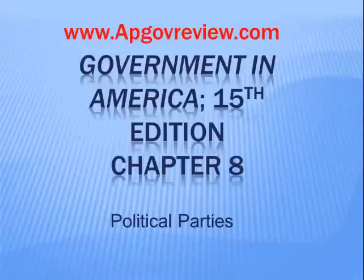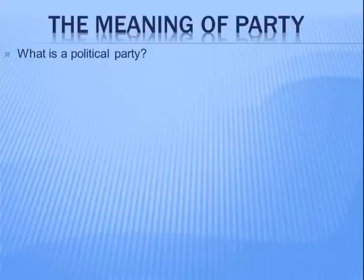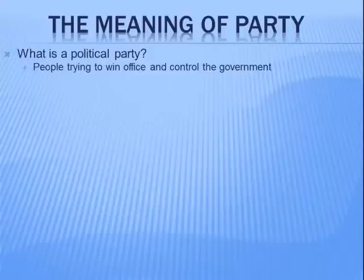Hey, what's going on AP Government people — we have chapter eight for you today of Government in America. This one is on political parties. We're going to go back in time a little bit and do a recap of history. Let's start off talking about what is a political party: it is people that are trying to win office and control the government, and usually these people belong to one of two parties in present-day America.